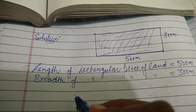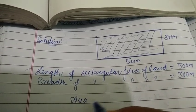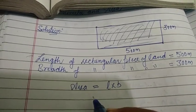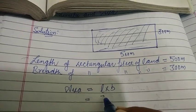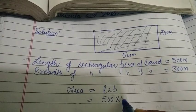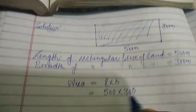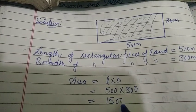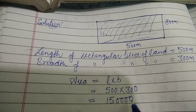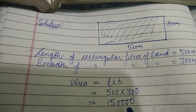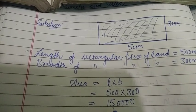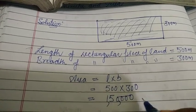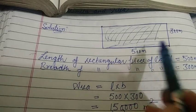You know what is the area of a rectangle — area of rectangle is length into breadth. So simply put the values: length is 500 meters and breadth is 300 meters. 5 times 3 is 15, so the area is 1,50,000 square meters. This is the area of this rectangular piece of land.